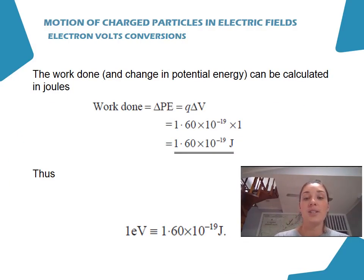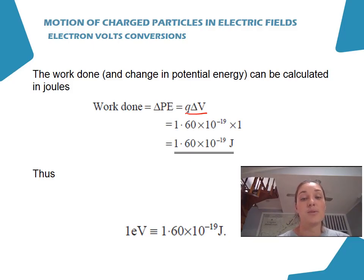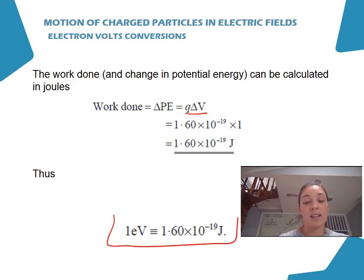The work done and change in potential energy can also be calculated in joules using W = QΔV. For an electron with charge 1.6 × 10⁻¹⁹ C moving through a potential difference of 1 volt, the work done is 1.6 × 10⁻¹⁹ joules. Therefore, 1 electron volt always equals 1.6 × 10⁻¹⁹ joules.